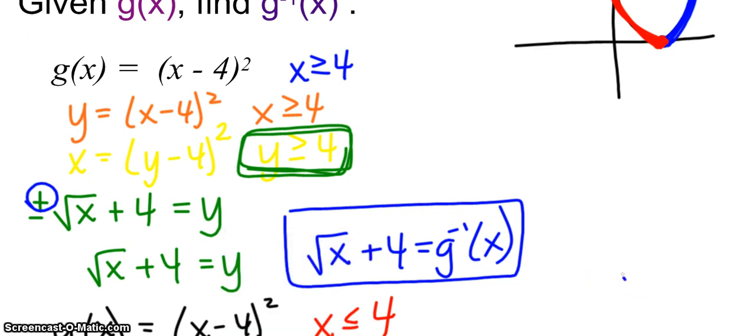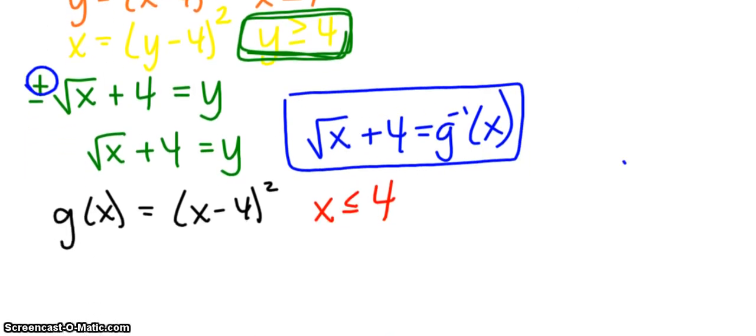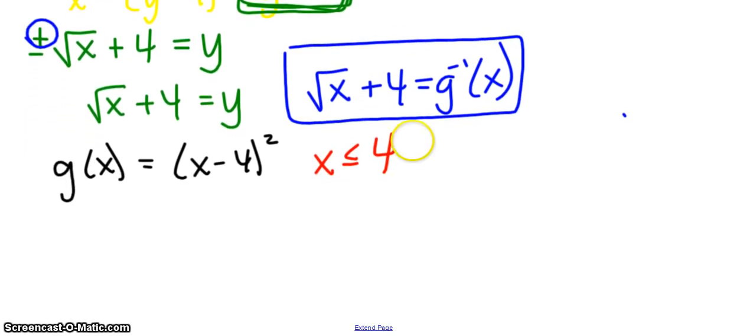Alright, so for the blue one, we kept the positive piece because we're talking about this positive part of our parabola. I want you now to think about what's going to happen, make a prediction, if we're talking about the left part of the parabola, the x is less than or equal to 4. You're going to go through, apply your four steps, and see if you can pick which one of these you want to keep for finding your inverse. Go ahead and pause your video to try this next problem.